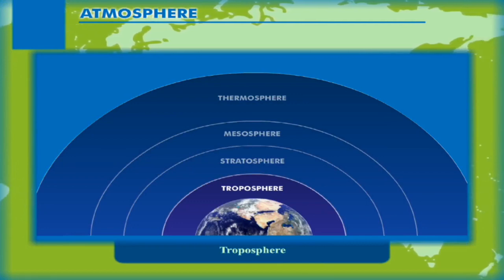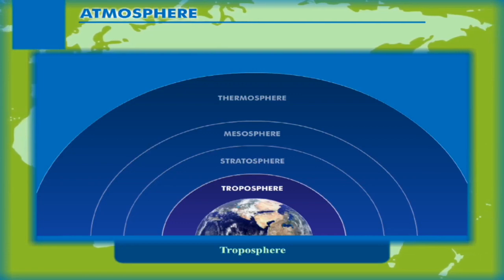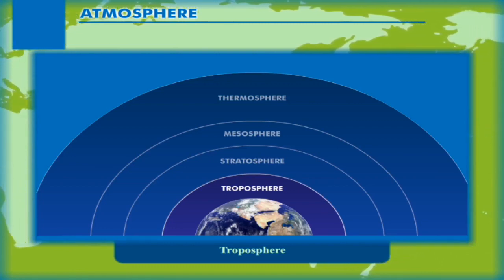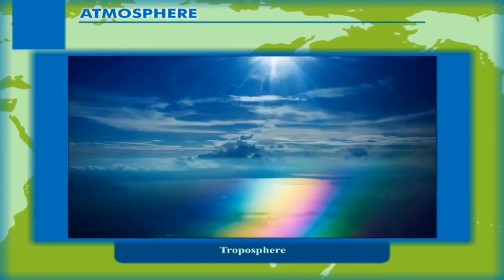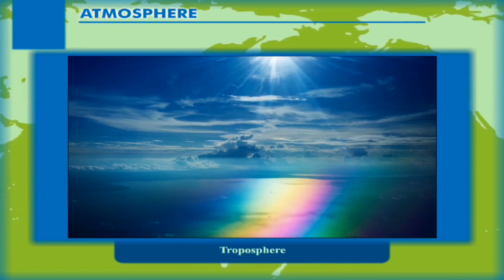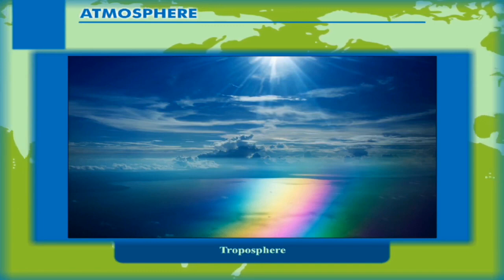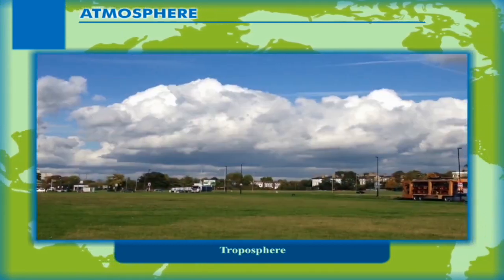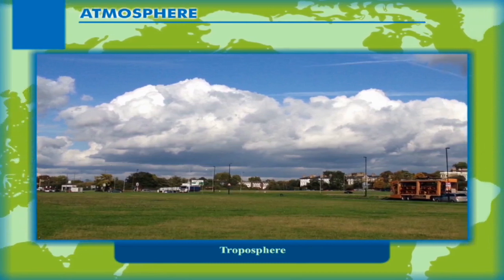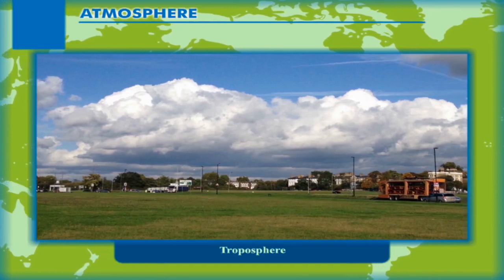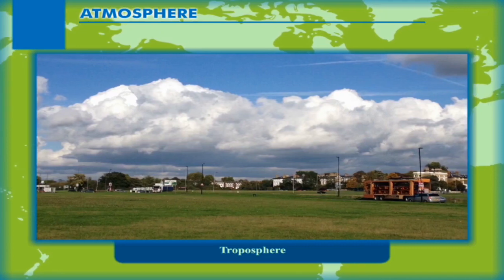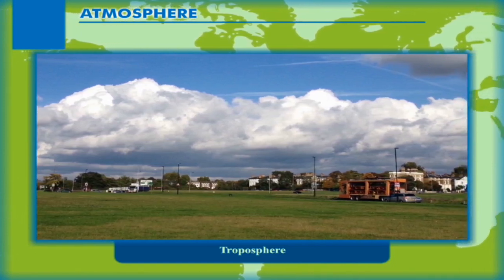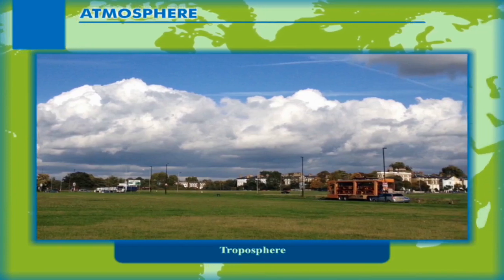Troposphere: The lowest and densest layer of the atmosphere is known as the troposphere. About three-fourths of the mass of the atmosphere is contained within this layer. This is the sphere in which changes related to weather conditions occur. It protects the heat of the sun during the day and keeps the earth warm at night. The extent of the layer is about 18 km above the equator but only 8 km above the two poles. Most of the water vapor, dust particles, and clouds are formed in this layer. The upper limit of the troposphere is called the tropopause.